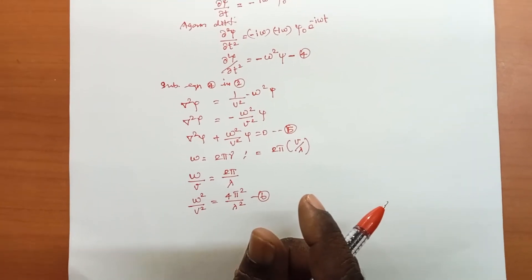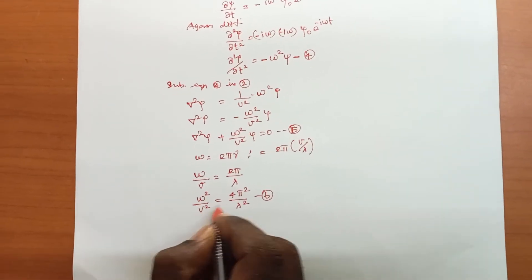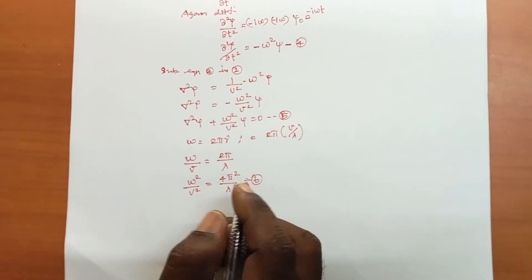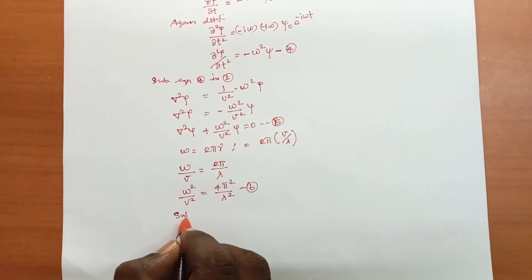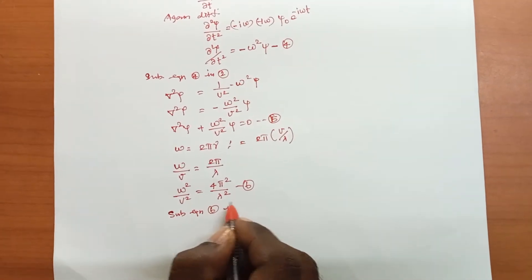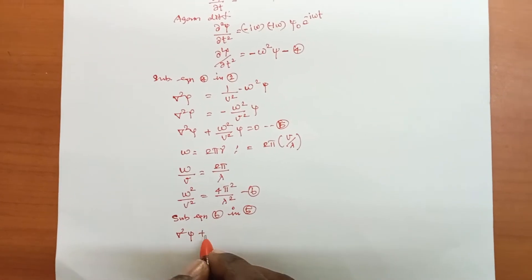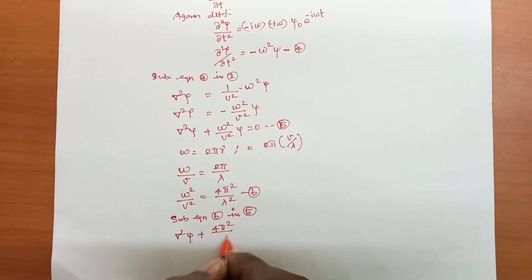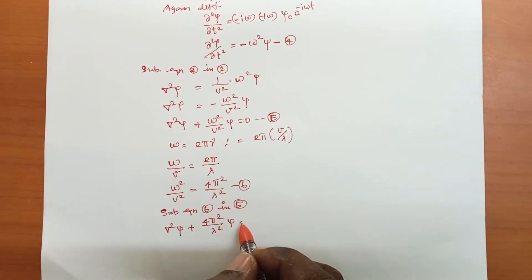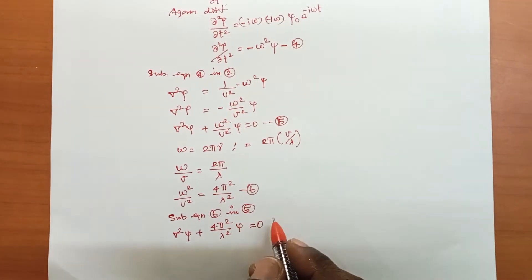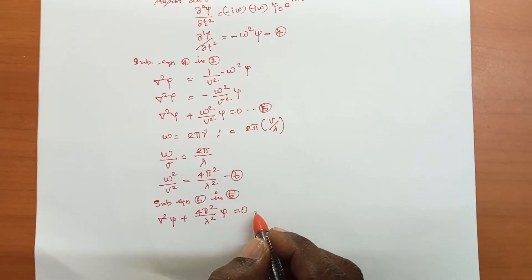Substituting equation 6 into equation 5: ∇²ψ + (4π²/λ²)ψ = 0. This is equation number 7.